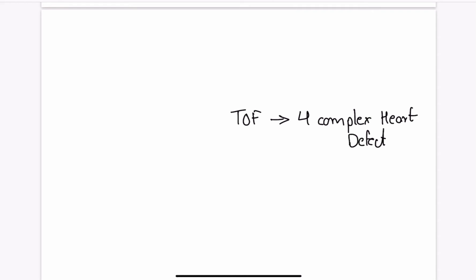First let's learn about the cause of this disease. As I said earlier, Tetralogy of Fallot is a congenital heart defect, so this is due to abnormal development of the heart.